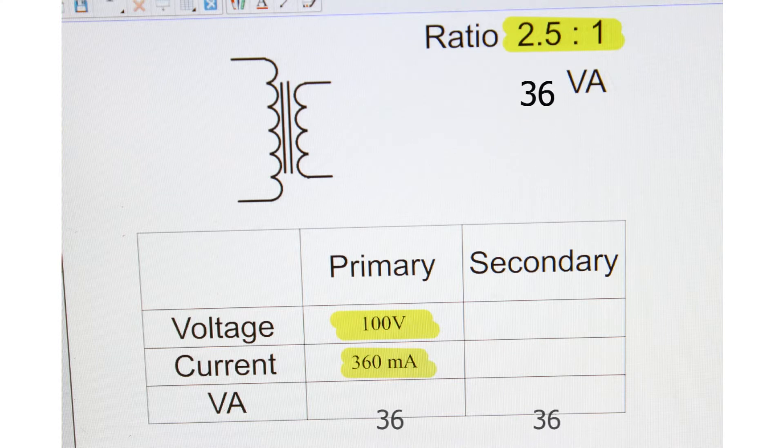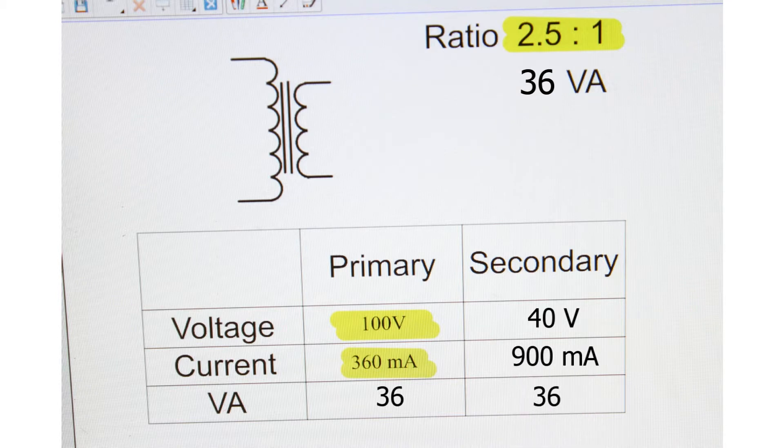Multiply 100 volts times 360 milliamps gives you 36 volt amps. Since it's a 2.5 to 1 ratio, we take the 100 divided by 2.5 and come up with 40. 40 goes into 36, 900 milliamps.